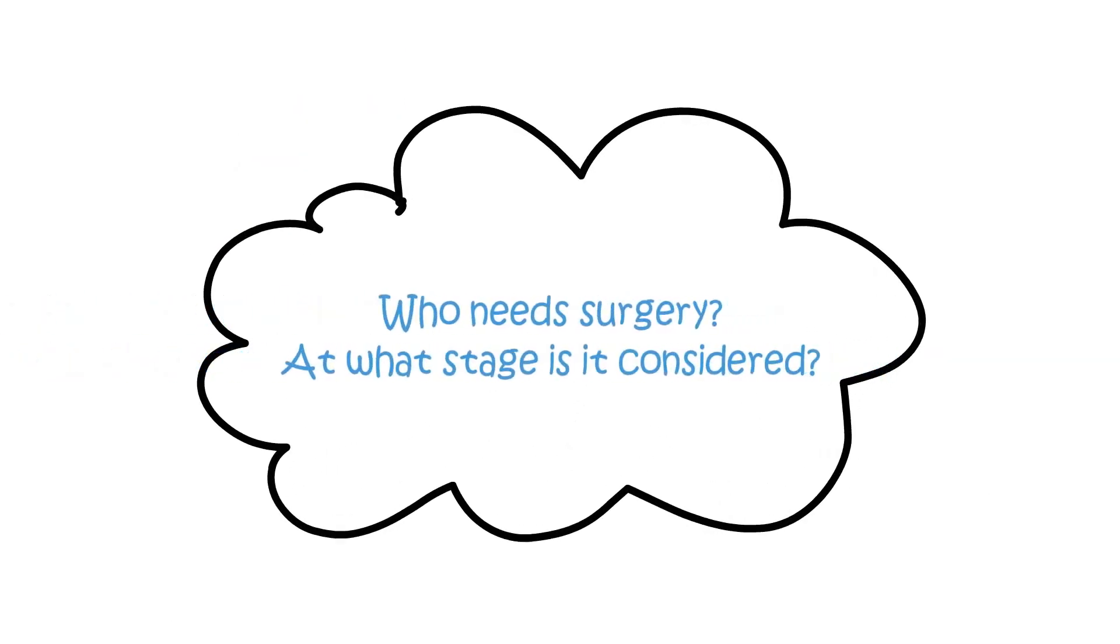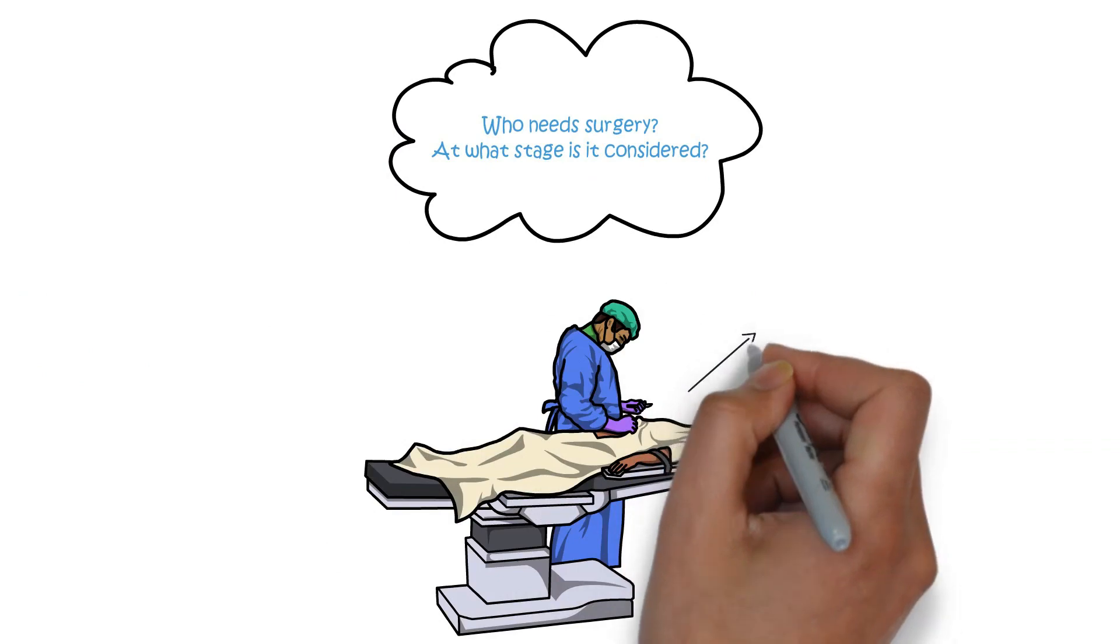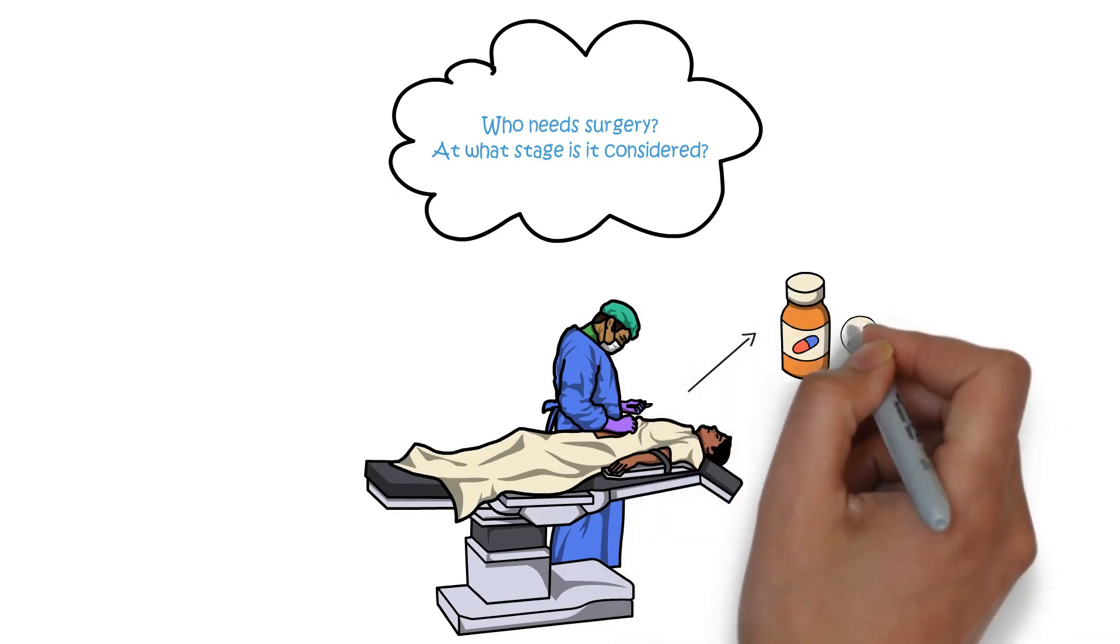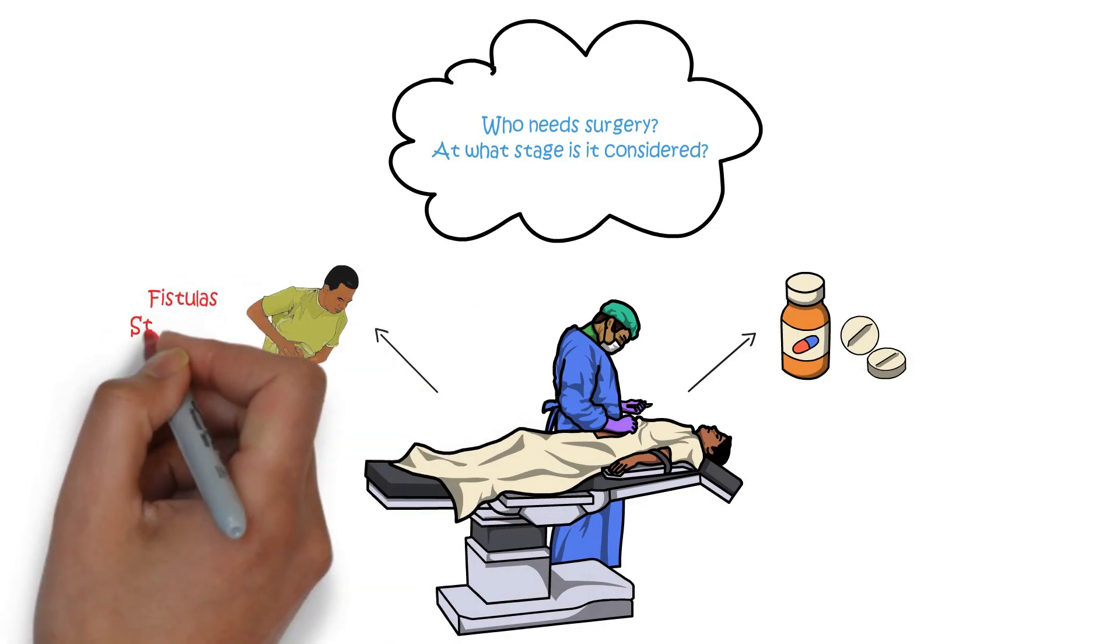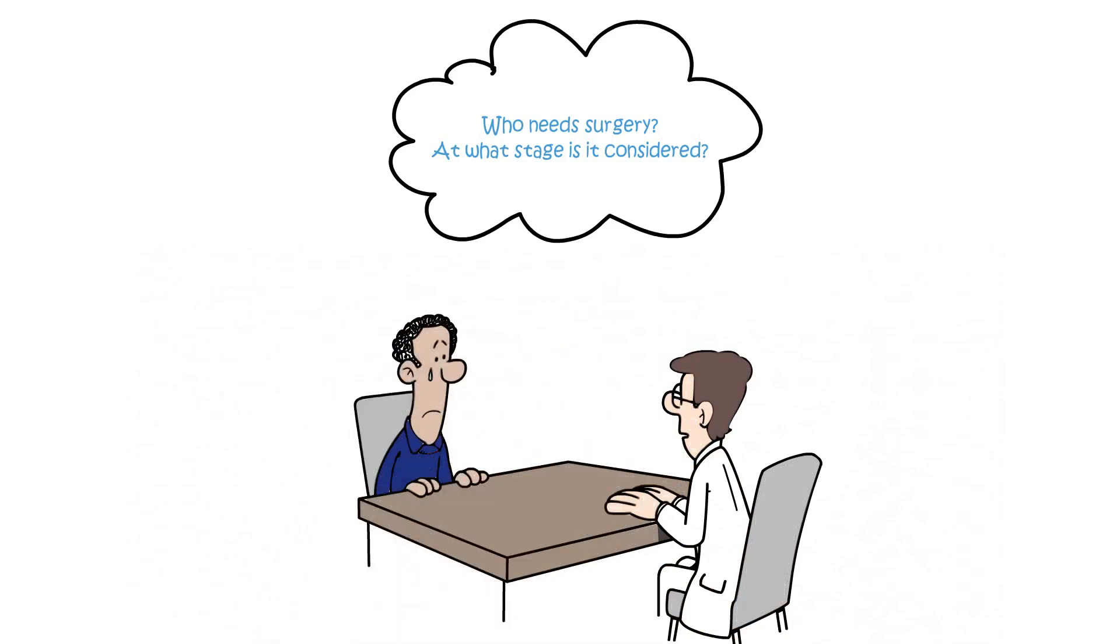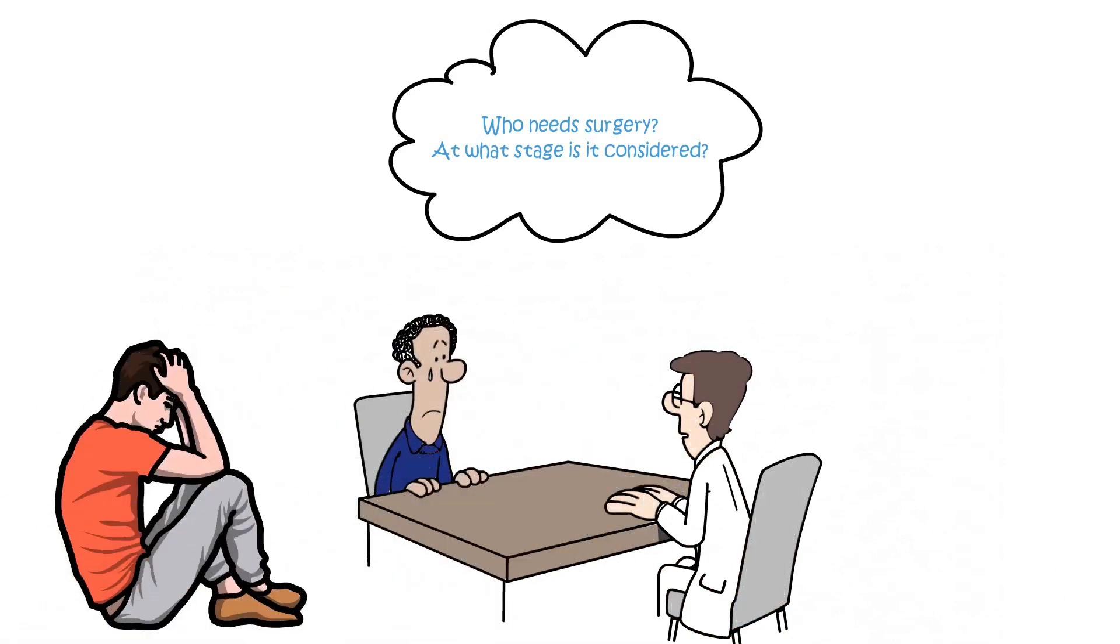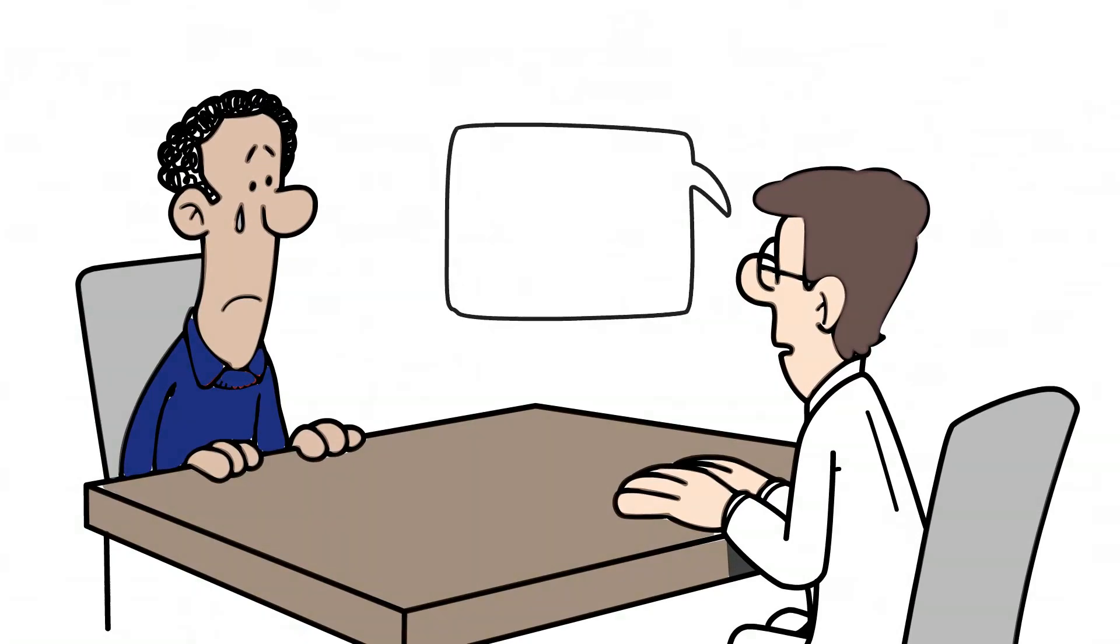Who Needs Surgery? At what stage is it considered? Surgery may be considered as a treatment option for people with Crohn's who do not respond to medication or who have severe or life-threatening complications such as fistulas, strictures, and abscesses. It is usually considered when all other treatments have failed and the symptoms of Crohn's are significantly impacting a person's quality of life. If surgery is something that is required, your healthcare professional will be able to discuss this in much more detail with you and answer all of your questions.